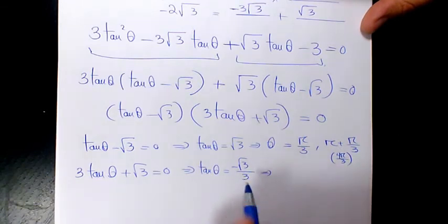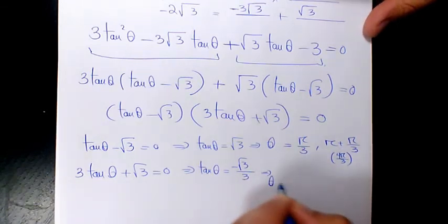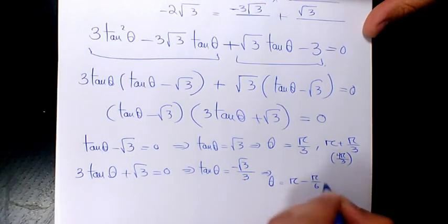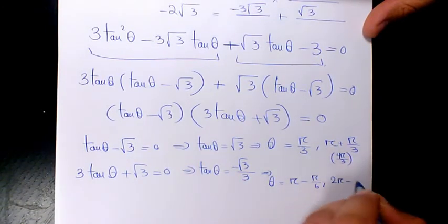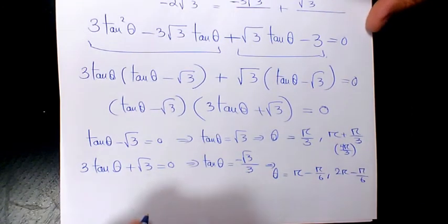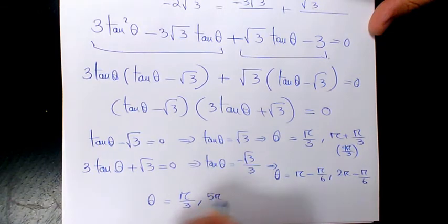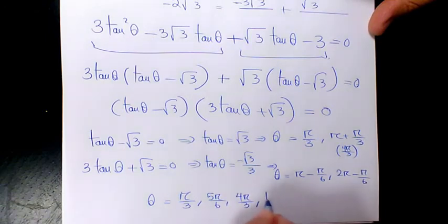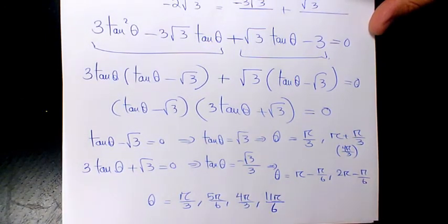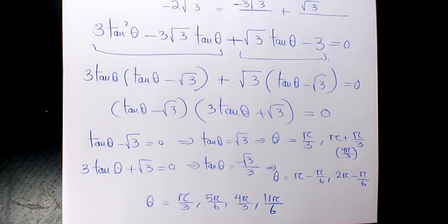Negative root three over three is negative, so we look at quadrant two and quadrant four, giving pi minus pi over six and two pi minus pi over six. So the four answers are theta equals pi over three, five pi over six, four pi over three, and eleven pi over six. That is the final answer.